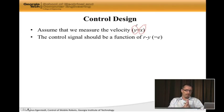And now the control signal should be a function of r minus y, where r is the desired velocity and y is the actual velocity. And I'm going to call this e, which stands for error. And our job as control designers is to make the error disappear, drive the error down to zero.